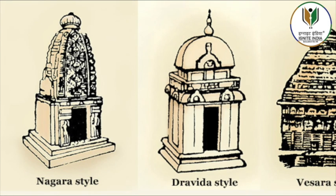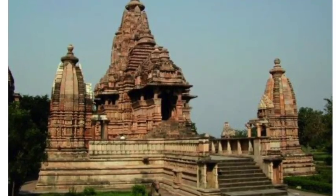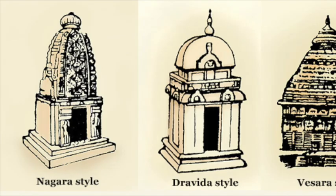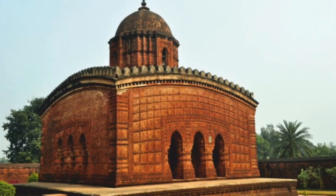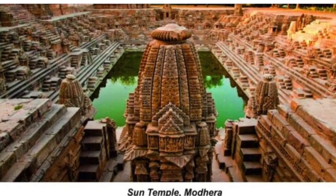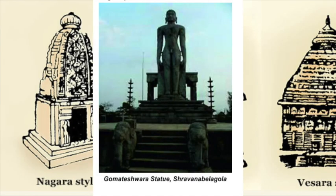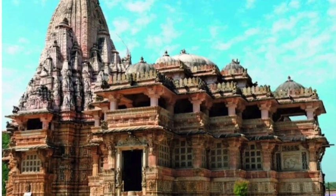Founded in 1336, Vijayanagara, literally 'city of victory,' attracted a number of international travellers such as the Italian Niccolò di Conti, the Portuguese Domingo Paes, etc., who have left vivid accounts of the city. Various Sanskrit and Telugu works document the vibrant literary tradition of this kingdom. Architecturally, Vijayanagara synthesizes the centuries-old Dravidian temple architecture with Islamic styles demonstrated by the neighbouring sultanates.